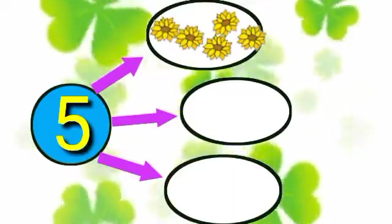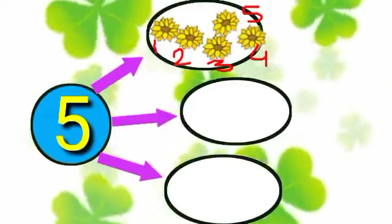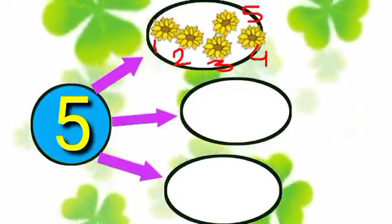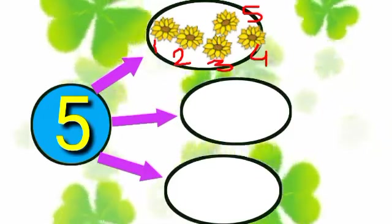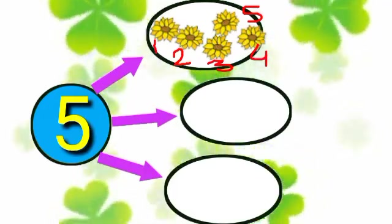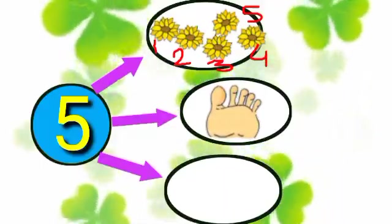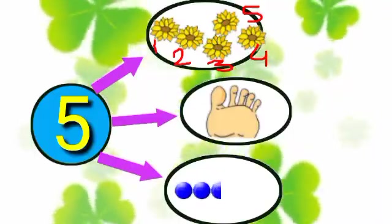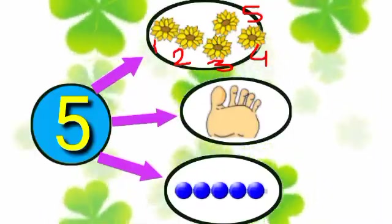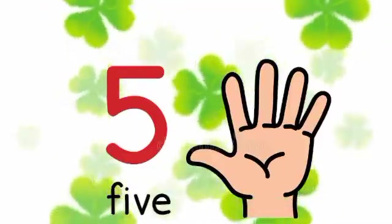Let's count: 1, 2, 3, 4 and 5. 4 and 1 make 5. This is a symbol of 5.